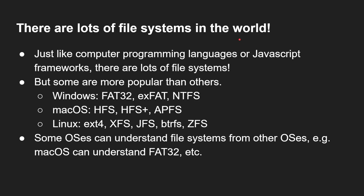Just like computer programming languages or JavaScript frameworks, there are many types of file systems. On Windows we're going to be looking at FAT32, exFAT, and NTFS. To name a few others: HFS, HFS+, and APFS are Apple's file systems. On Linux you've got EXT4, XFS, JFS, Btrfs, ZFS, and so on. One key thing to note is that some OSes can understand file systems from other operating systems. For example, macOS can understand FAT32, and that will be important in a moment.